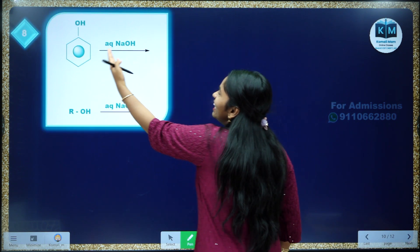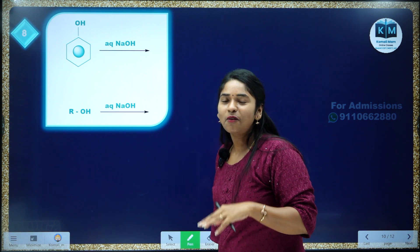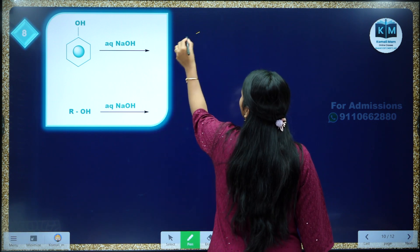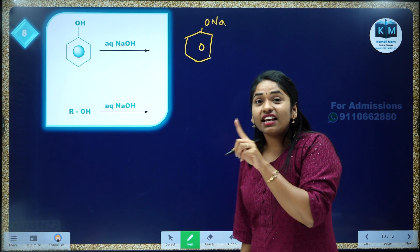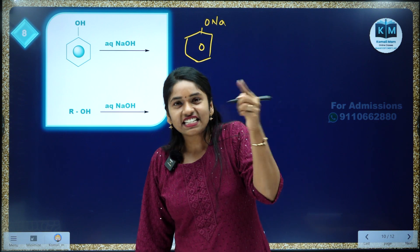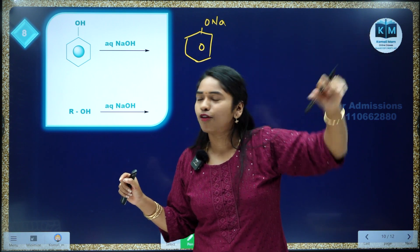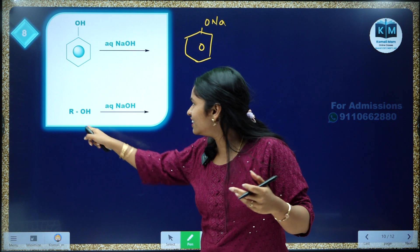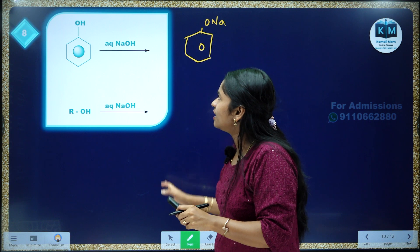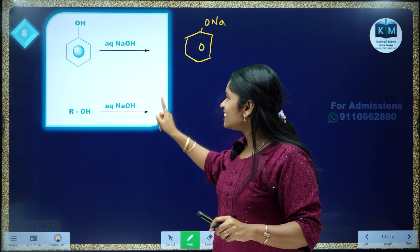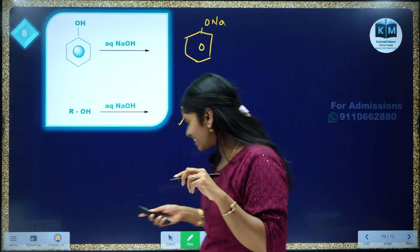When you take phenol and treat with aqueous NaOH, the reaction is possible: phenol reacts with aqueous NaOH to give sodium phenoxide. However, alcohols do not react with NaOH in this way. Even if an alkoxide forms, it is a stronger base, and the water formed is a stronger acid than the alcohol, so the reverse reaction happens. So: phenol with NaOH — reaction is possible; alcohol with NaOH — reaction is not possible.